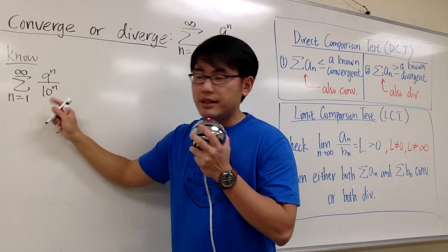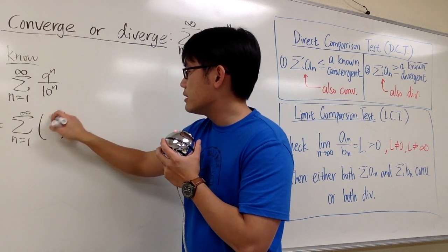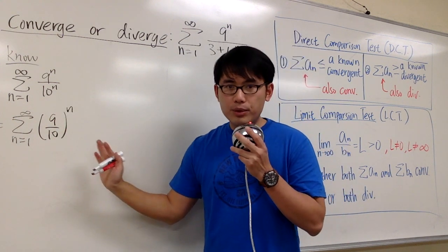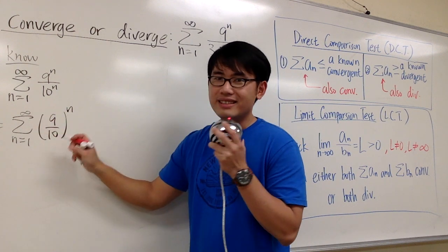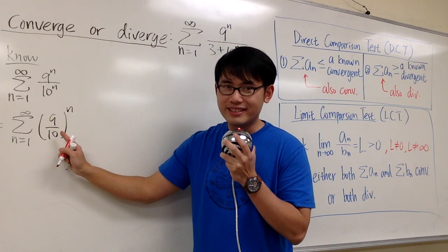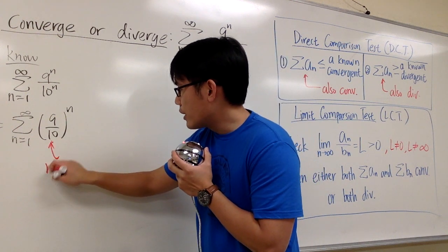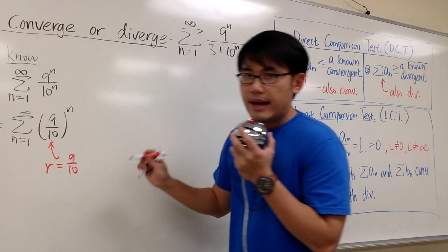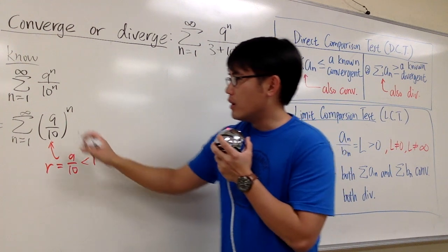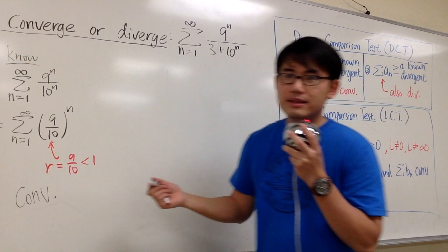Let me rewrite this as sigma when n goes from 1 to infinity, 9 over 10 raised to nth power. And the reason for me to do that is because now I can say this is a geometric series. Because we have a common ratio, this number, 9 over 10, never changes and then raised to an n power. So we said r is equal to 9 over 10. And more importantly, we have to indicate that 9 over 10 is less than 1. Therefore, we know this series converges by geometric test.